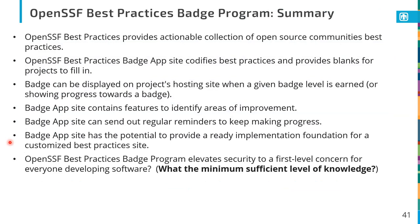In summary, the OpenSSF best practices program provides a set of actual criteria that you could argue is the open source community's curated best practice. The best practices badge site helps you to codify these best practices, list them out, and provide fields to fill in how your projects address each one and whether they follow them. Once you've got an entry for a project, you can display a badge on the project's listing sites to show that your project follows those accepted best practices. The badge app site contains features to help your project continue in its process improvement, and sends out regular email reminders to help with that.